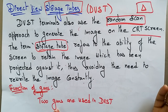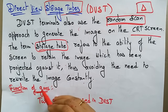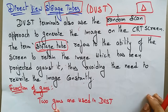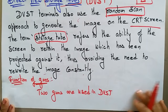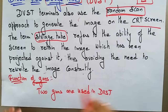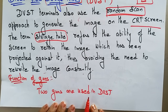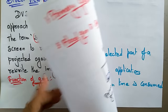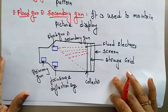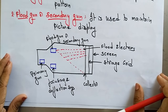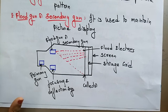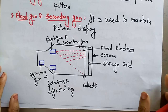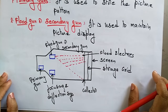Two guns are present and used in the Direct View Storage Tube. The Direct View Storage Tube uses two guns: one is the primary gun and the other is the secondary gun, also called the flood gun.